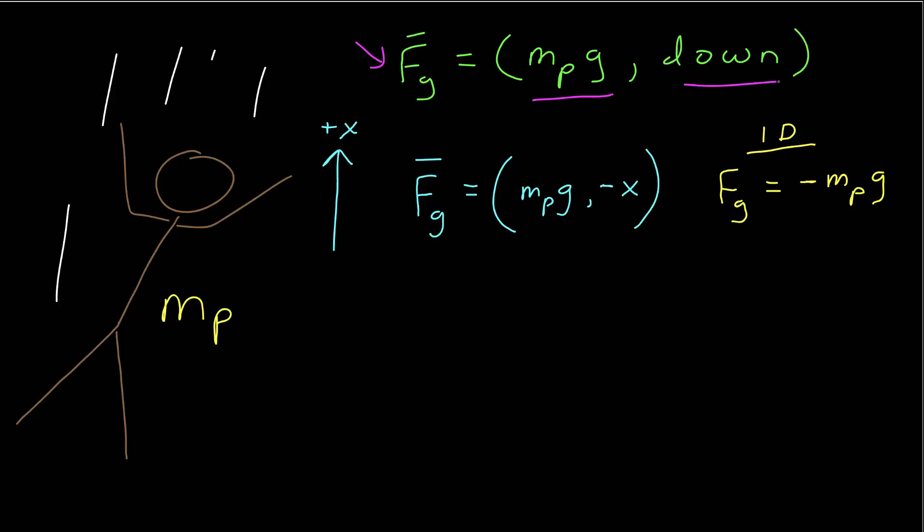First, let's identify a coordinate system. The positive x is up. In that case, the magnitude of the force is still the same, and the direction would be along the negative x-axis,